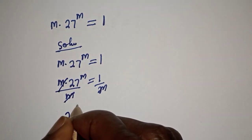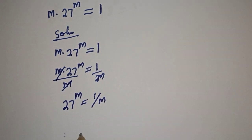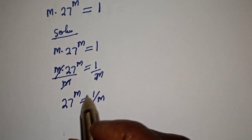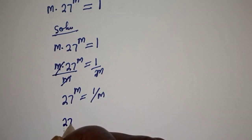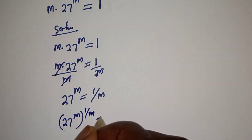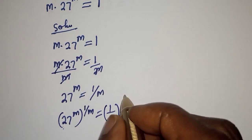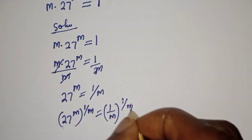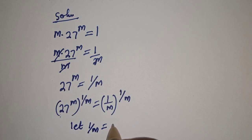Then let's multiply the exponent of both sides by one over m. So 27 raised to power m, to the power of one over m, is equal to one over m to the power of one over m. Let s equal one over m.